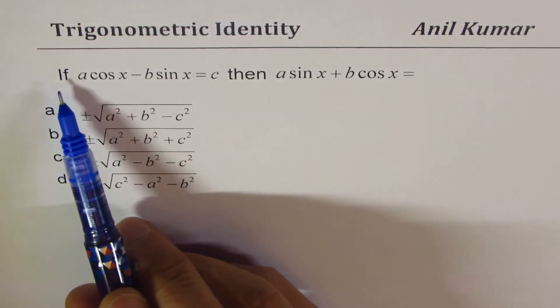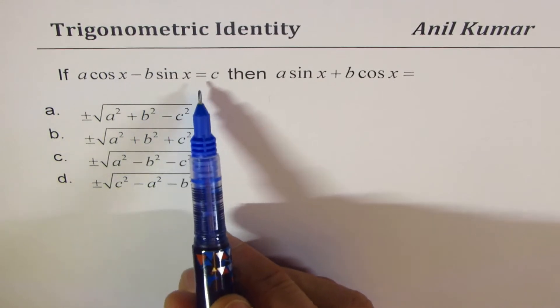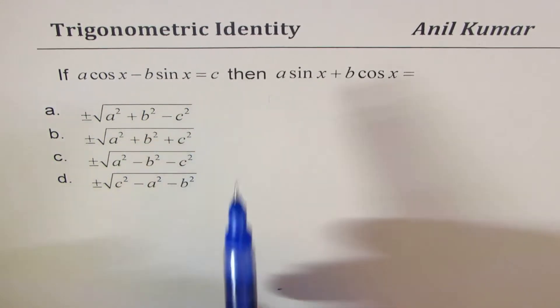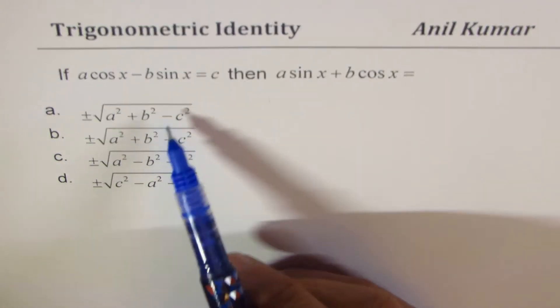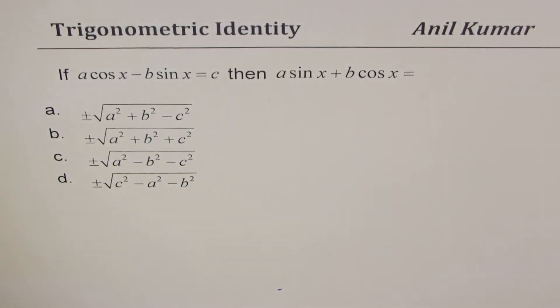The question here is: if A cos x minus B sin x is equal to C, then A sin x plus B cos x is equal to what? We are given four different choices.